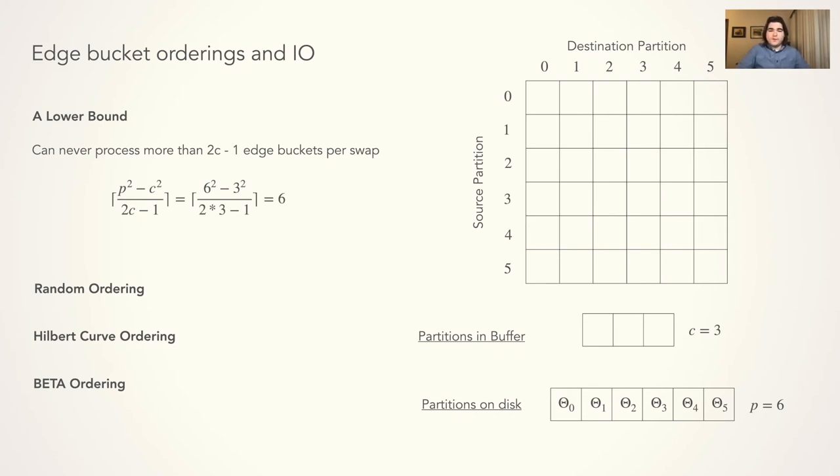We can derive an analytical lower bound for the minimum number of swaps needed to process all edge buckets. We do this by using the fact that any given swap to the buffer can provide at most 2c-1 edge buckets to be processed. For this example, not counting the swaps to initialize the buffer to some random state, we get a lower bound of 6.